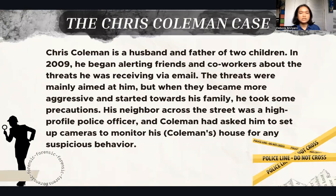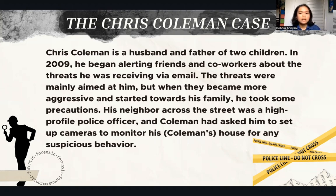Now we will discuss the Chris Coleman case. First, we have to know the chronology. Chris Coleman is a husband and father of two children. In 2009, he began alerting friends and co-workers about threats he was receiving via email. The threats were mainly aimed at him, but when they became more aggressive and started targeting his family, he took precautions. His neighbor across the street was a high-profile police officer, and Coleman had asked him to set up cameras to monitor his house for any suspicious behavior.